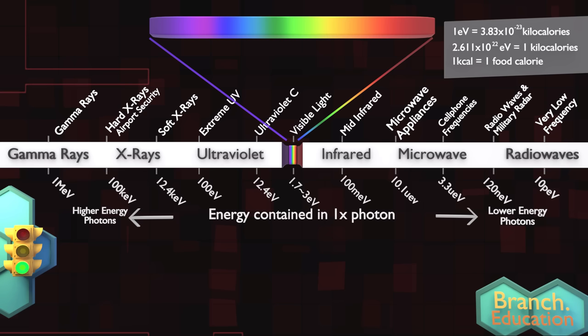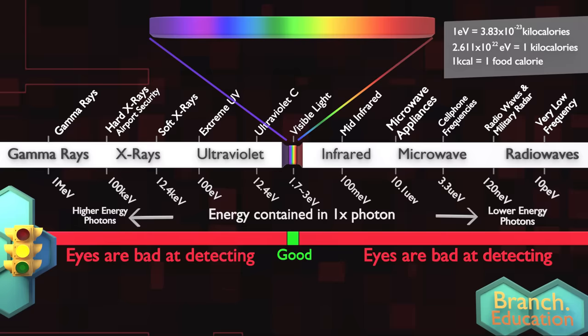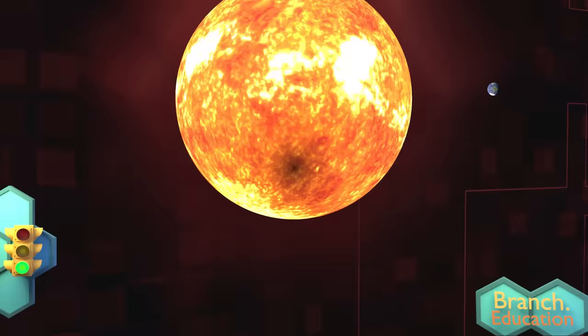Microwaves, X-rays, and radio waves are all photons, but why aren't our eyes, or our smartphones able to detect these photons, while being great at detecting these photons? Well, the answer all comes down to the sunlight that we see on Earth.